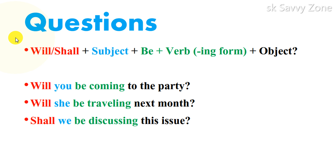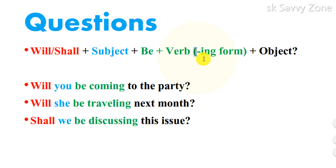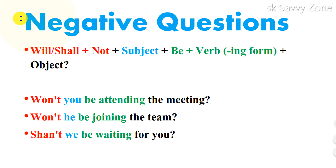The interrogative sentences in the future continuous tense follow the formula: Will/Shall + Subject + be + present participle + question mark. For example: 'Will you be coming to the party?' 'Will she be traveling next month?' and 'Shall we be discussing this issue?'